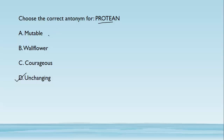Looking at the other options: 'mutable' means something which can change, and 'immutable' means something which does not change — so if 'immutable' had been an option, that would also be a correct answer. 'Wallflower' refers to someone who is not very social, an introvert who does not like social gatherings. The correct antonym for protean is 'unchanging.'